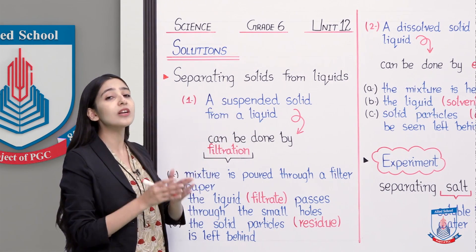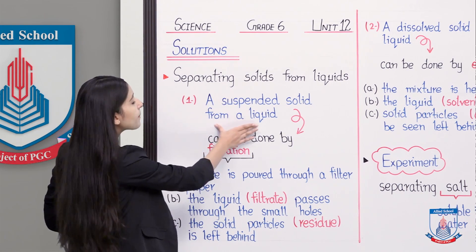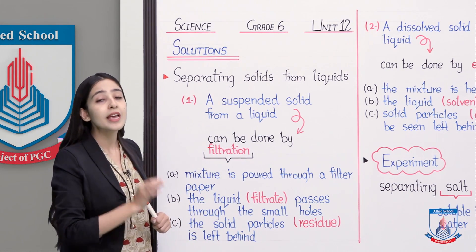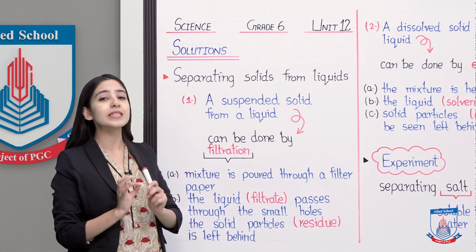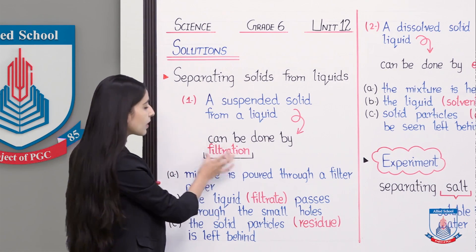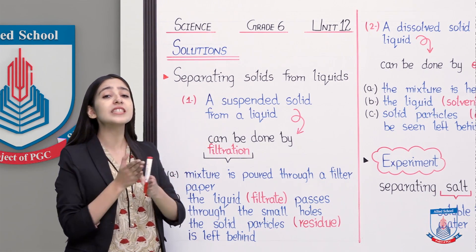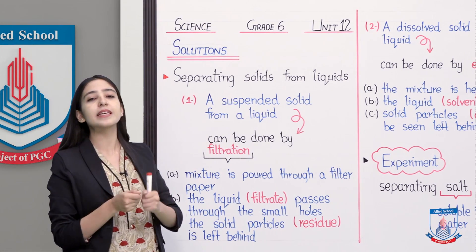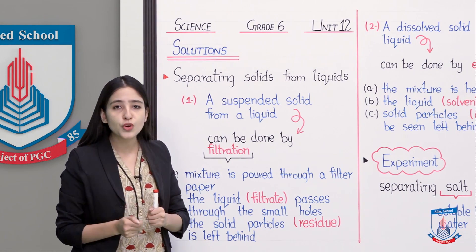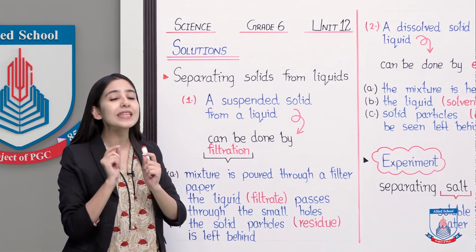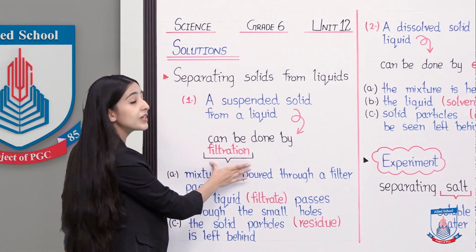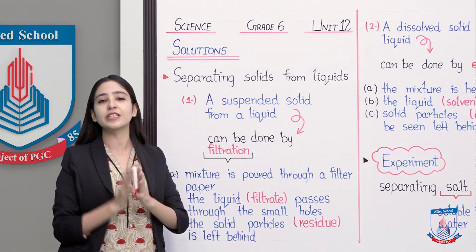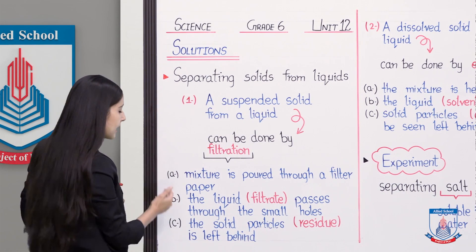When we have to separate the solid from the liquid in a suspension, we do it by the process of filtration. Filtration uses a filter paper to separate solid things from the liquid. You can see that when your mother makes tea in your house, it will be strained before giving it to you — the solid tea leaves don't come through. In the same way, the filtration process works here. Filter paper is used and the solid particles are removed. There are three steps: A, B, and C.